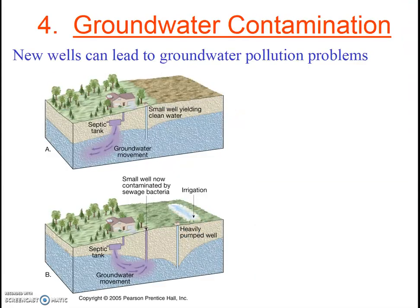Lastly, groundwater pumping can sometimes lead to new pollution problems. Check out what happens when neighbors come in and start pumping a high-volume well — your own septic tank may contaminate your water as the gradient has now changed.